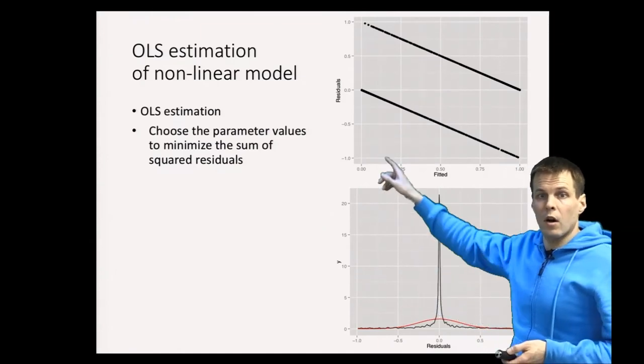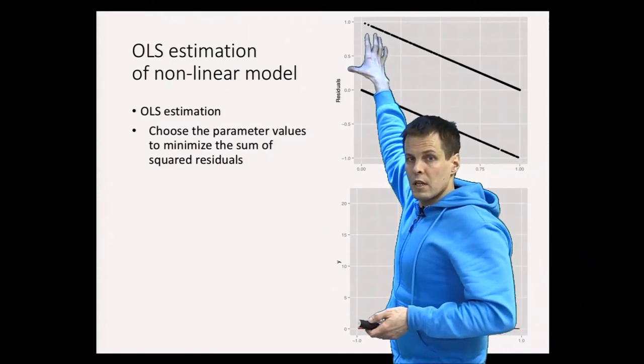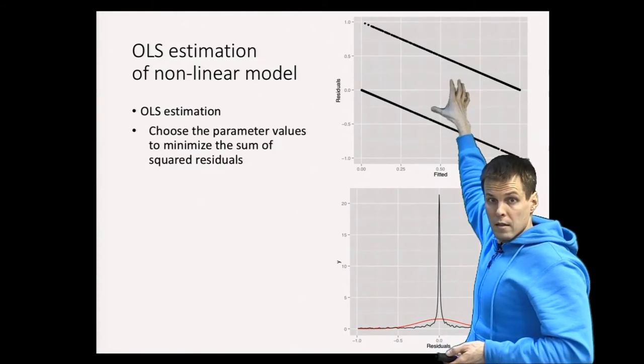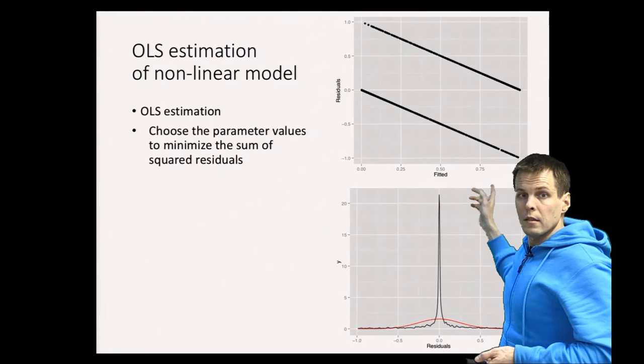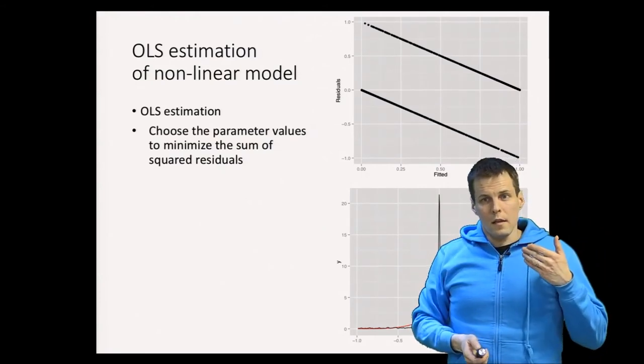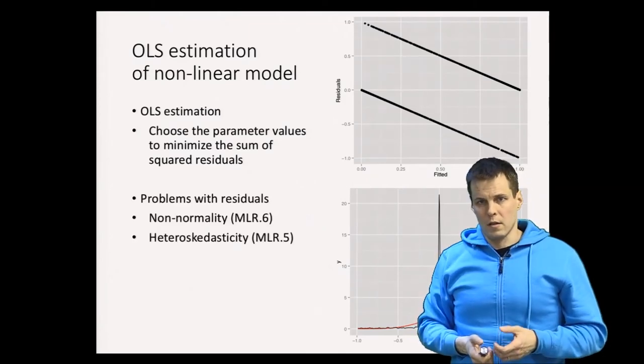Then we have a heteroscedasticity problem because the variation of the residuals here is a lot higher than the variation here, because the variance is the square of the residual. So we have a heteroscedasticity problem. We are in violation of the MLR 5 and MLR 6 assumptions.